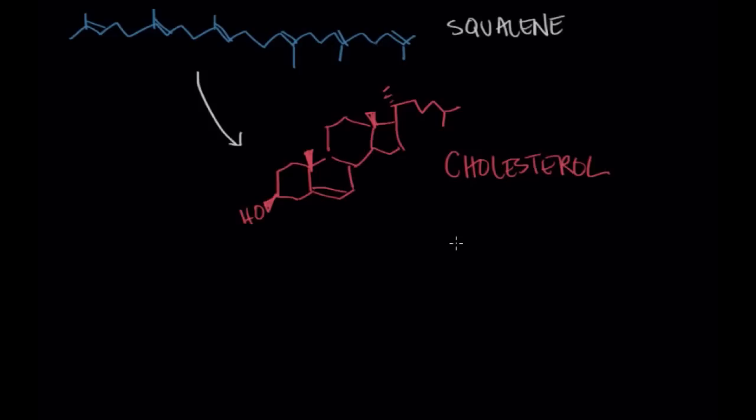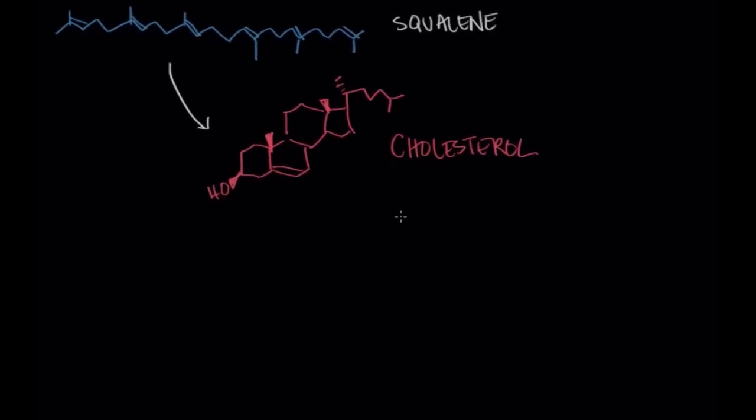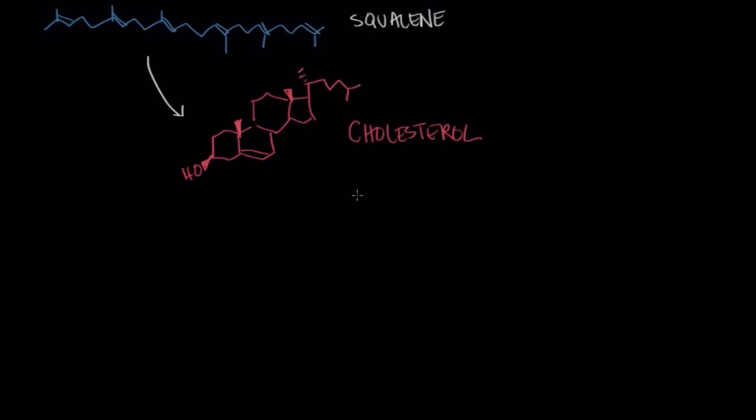And cholesterol travels through our blood and it lives in the inside of cells and on their surfaces. And in the case of endocrine organs that use steroid hormones to communicate, cholesterol can actually be altered to form the very characteristic steroid backbone.